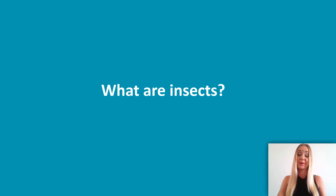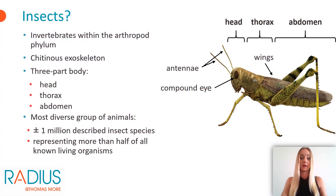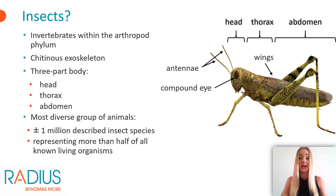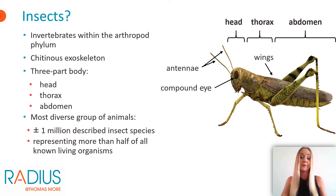We'll start with some general information about insects. What actually are insects? By definition, insects are invertebrates within the arthropod phylum. They do not have a vertebral column, but an exoskeleton consisting of chitin. They have a three-part body consisting of a head, a thorax, and abdomen. On the head, compound eyes are present. Insects can therefore perceive more of the environment at one time than humans, for example. They also have one pair of antennae, three pairs of jointed legs, and possibly have wings on their thorax.